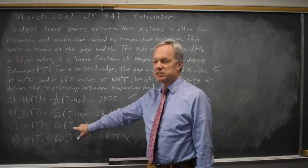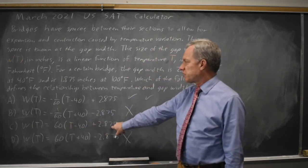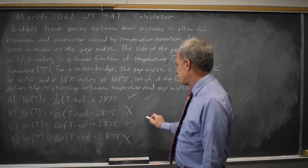Here 100 minus 40 is 60. 60 times 60 is 3600 plus 2.875, which is a whole lot bigger than 1.875, so that is not correct.